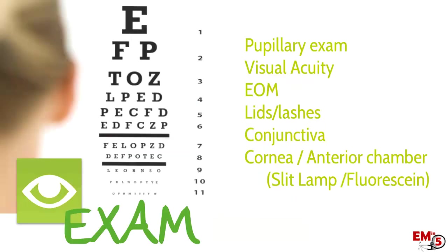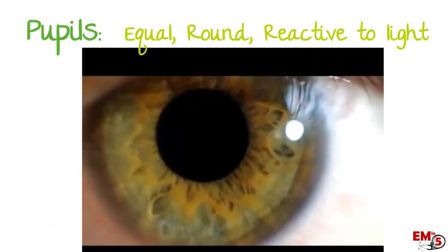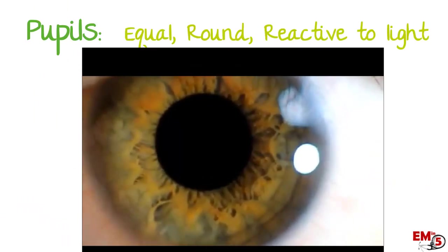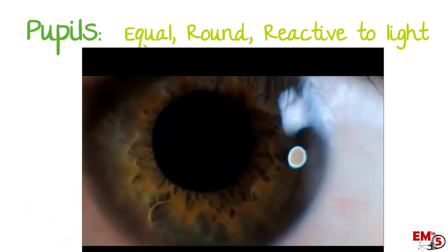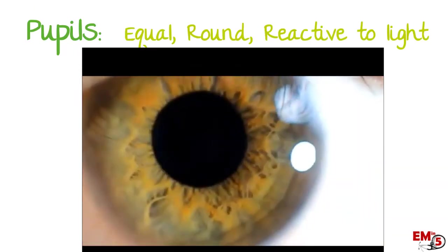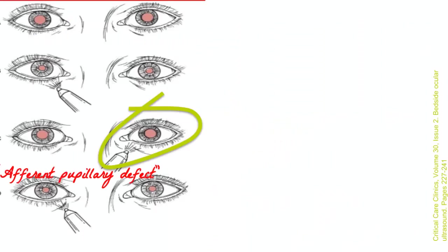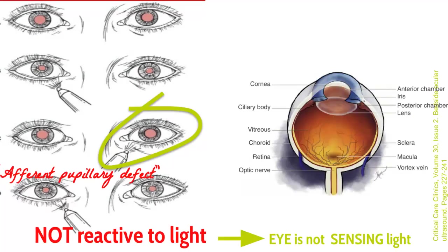Let's go through the full exam and point out some abnormal findings. Starting with the pupillary exam: normal pupils should be equal, round, and reactive to light. But what if we shine the light in the affected eye and neither of them constrict? This is concerning that the eye is not sensing light, and therefore there might be an issue with either the retina or the optic nerve.